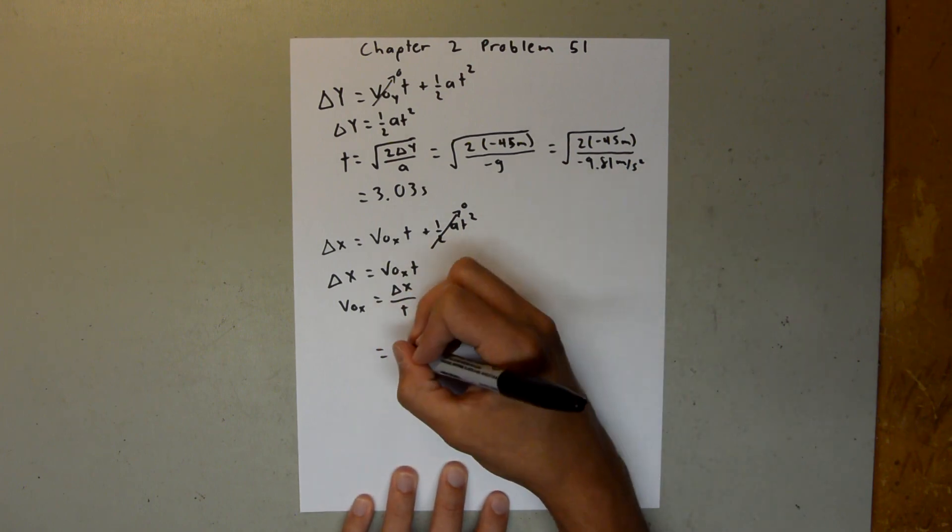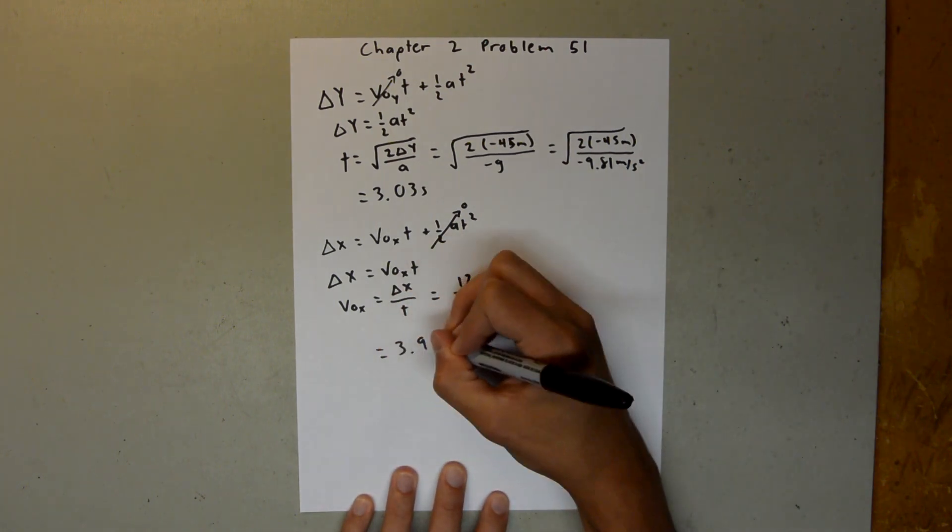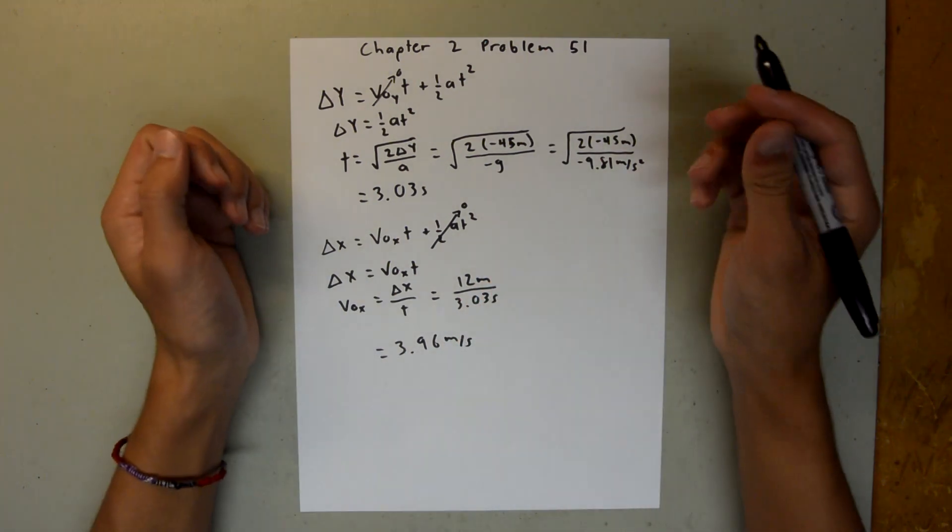And when you plug that into your calculator, you should get 3.96 meters per second for the speed of the boat.